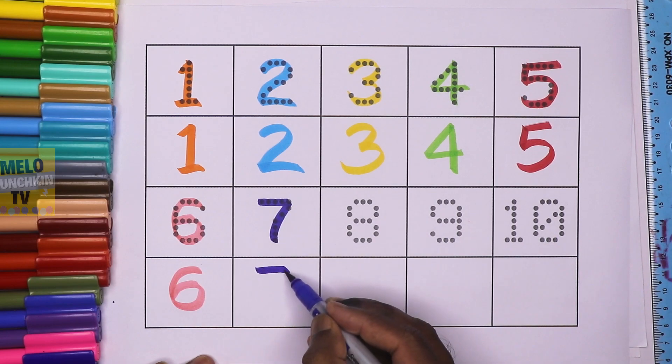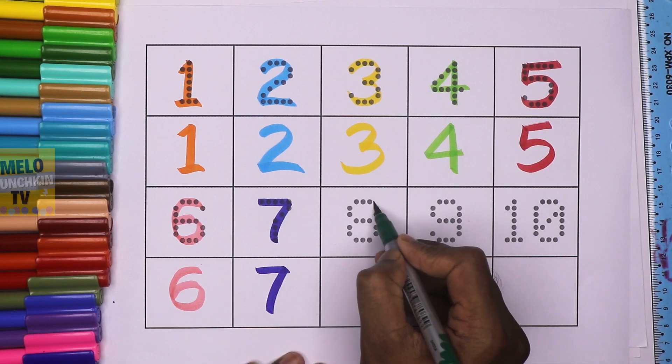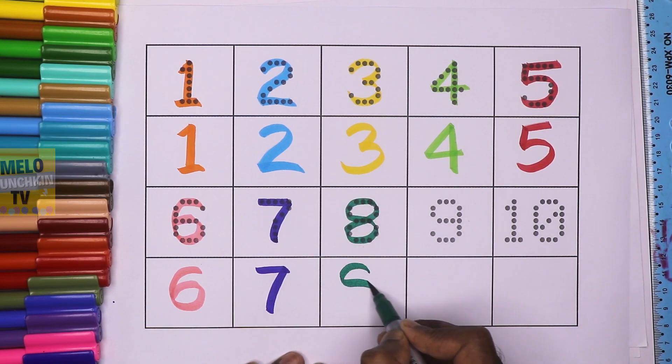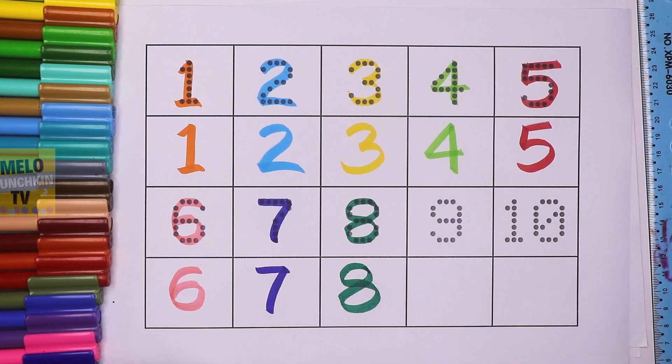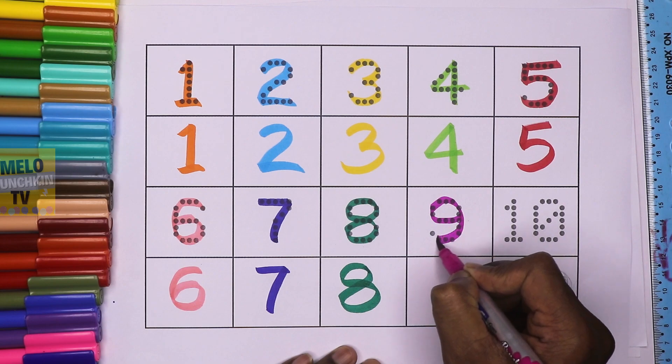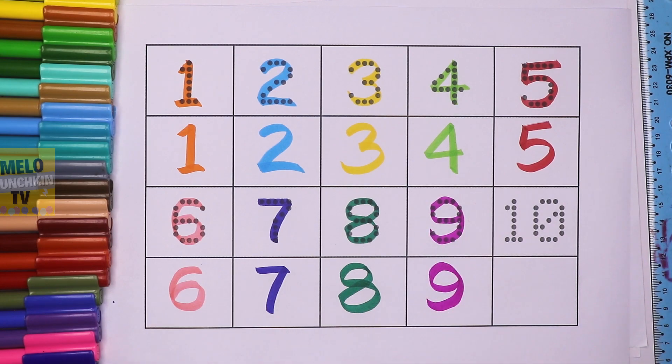S-E-V-E-N, seven. This is number eight. E-I-G-H-T, eight. E-I-G-H-T, eight. This is number nine. N-I-N-E, nine. N-I-N-E, nine.